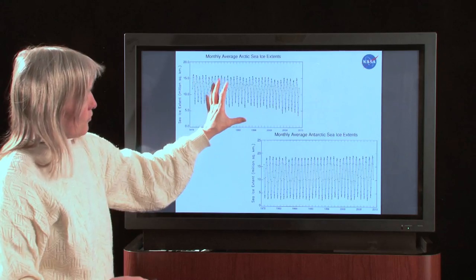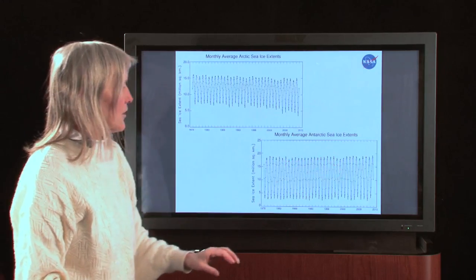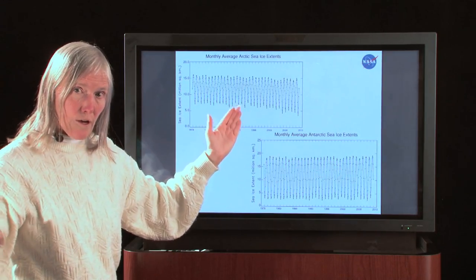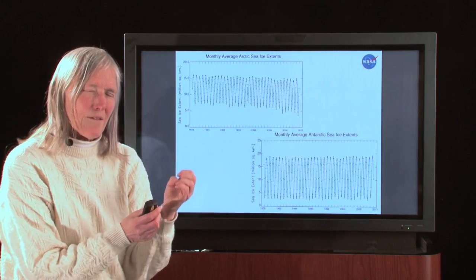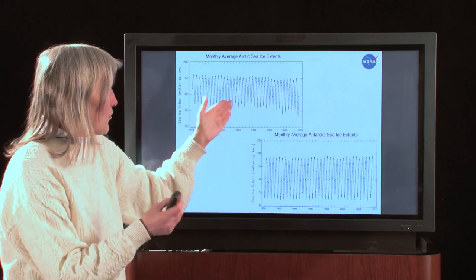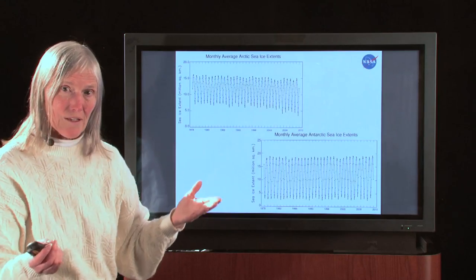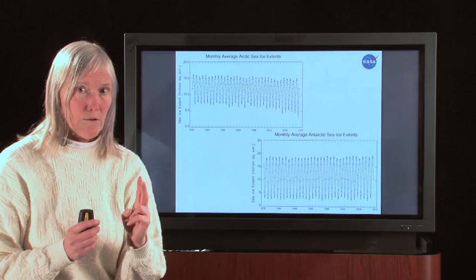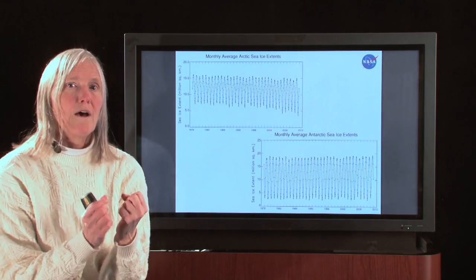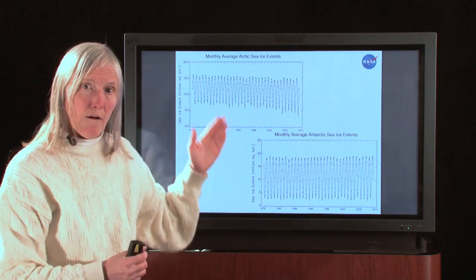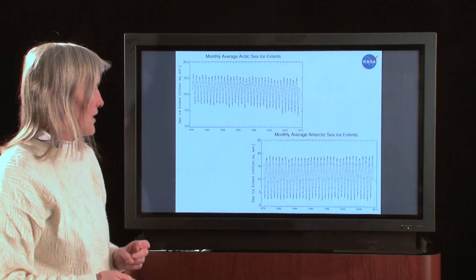So now we've got these two records — the Arctic here and the Antarctic here — and we've got great records of the monthly average sea ice extents in both. But for a scientist, that's not enough. You don't want to just have a picture showing the plot — you want to come up with a number to say how it has changed. In the next two videos, I'm going to be showing you how we come up with a final number of how the sea ice covers have changed over this time period.